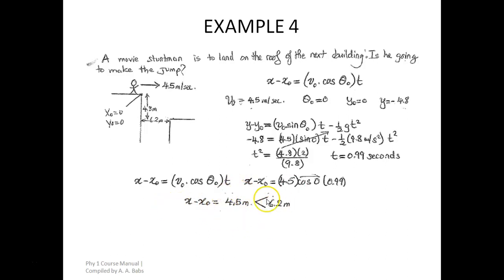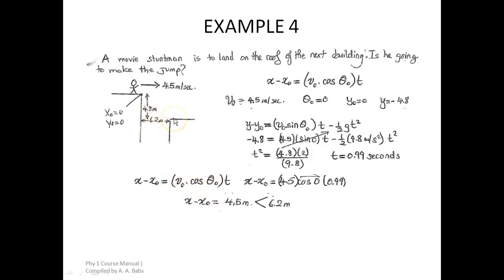Now, 4.5 meters is less than 6.3 meters, which is the horizontal distance between the buildings. Anyone making this jump must cover at least 6.3 meters — anything less means the stuntman will not reach the top of the lower building. Since 4.5 meters is less than 6.3 meters, he is not going to make the jump. The recommendation: do not jump. That solves the first problem.